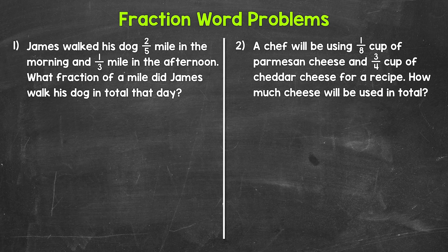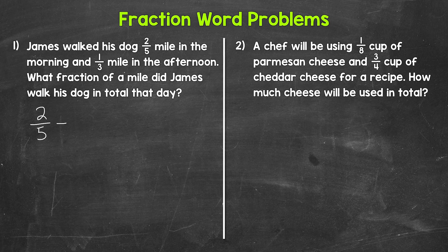Let's jump into number one where we have: James walked his dog two-fifths of a mile in the morning and one-third of a mile in the afternoon. What fraction of a mile did James walk his dog in total that day? So here we need to add to find our answer. We need to take the distances — the morning and the afternoon — and combine them in order to find the total distance. So two-fifths of a mile plus one-third of a mile. Now, we do not have a common denominator, so we need to find one in order to add.